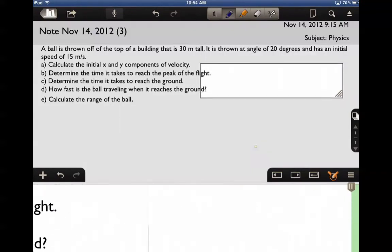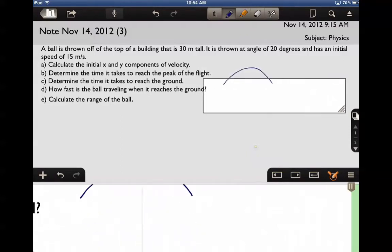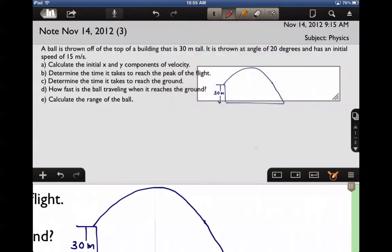You have an object, it's gonna keep going down, and over here would be the building. So the building is 30 meters tall. Now things we know from this picture: we're told about the initial launch. You know that it is being launched upward and the angle there is 20 degrees.